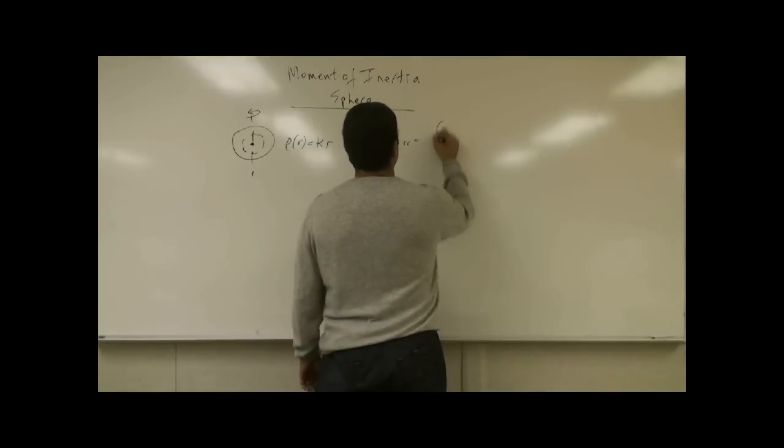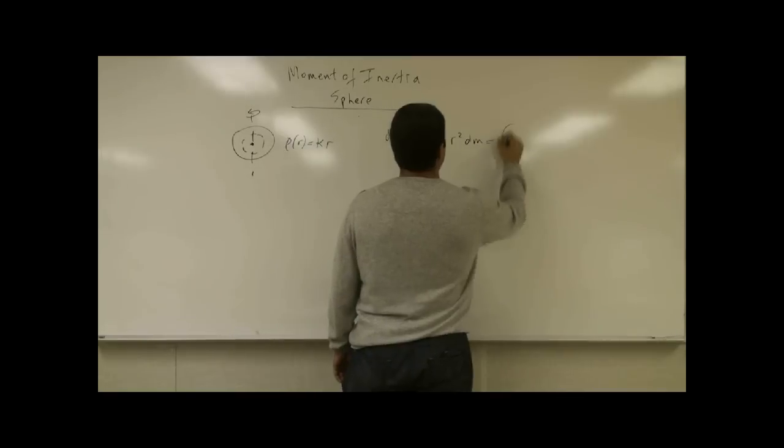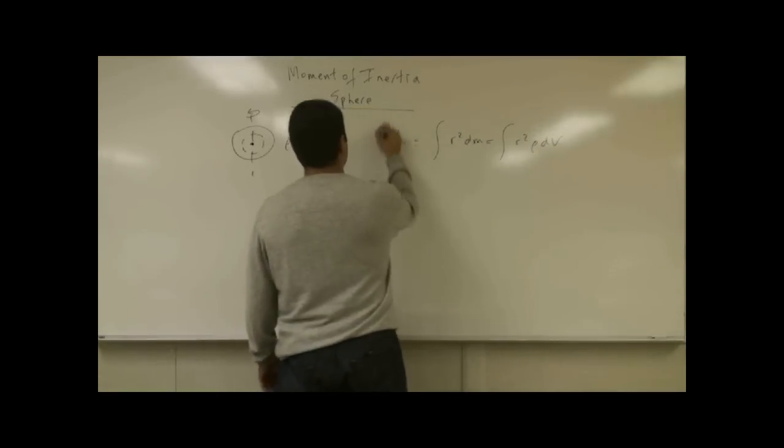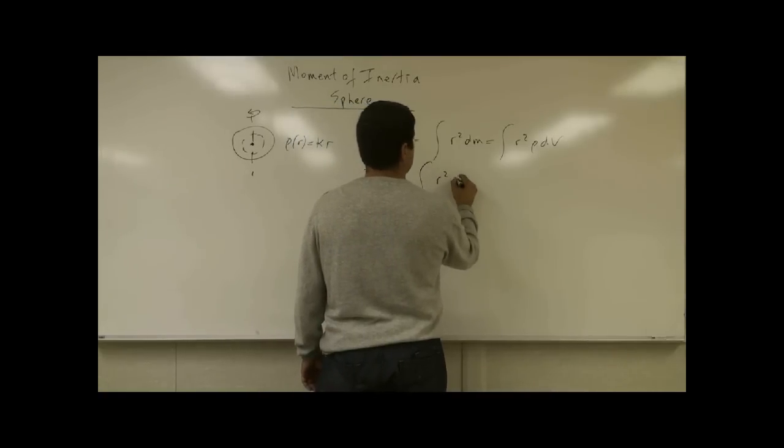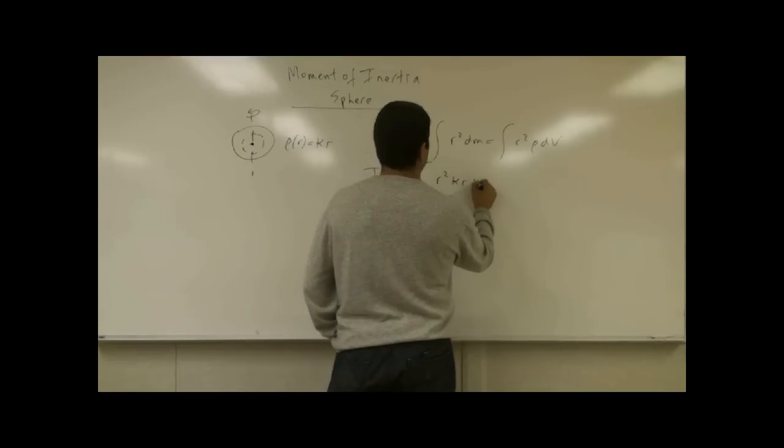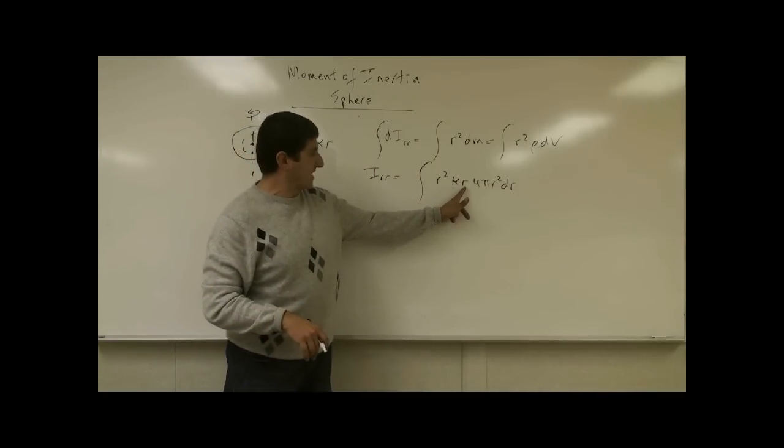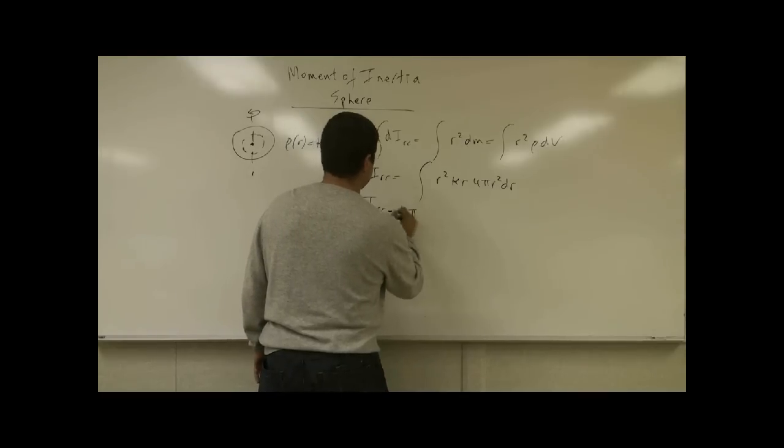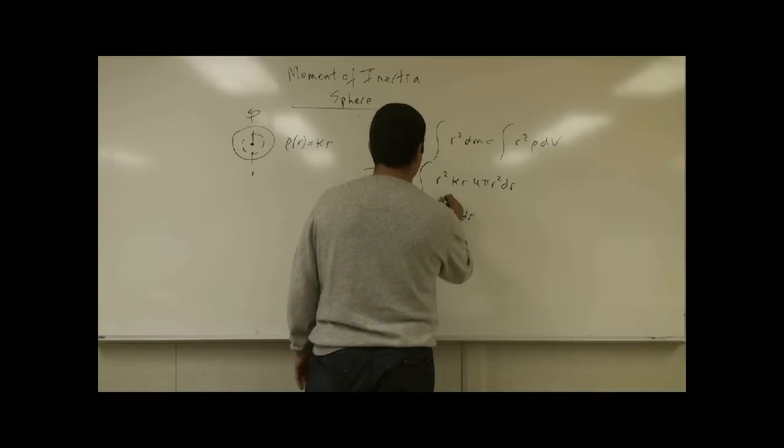So I'm going to do integral r squared dm, rho dv. And integrate this I_rr equals integral r squared and then we have kappa r, 4 pi r squared dr. This is the volume of a spherical shell. Then kappa r is the mass density, volume of mass density. Then you have 4 pi kappa r to the 5th dr from 0 to r.